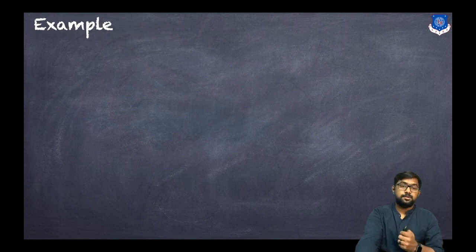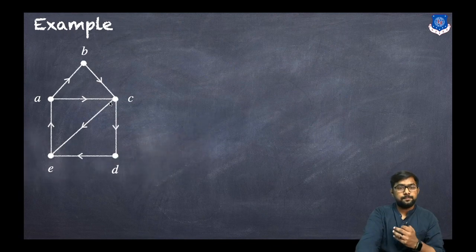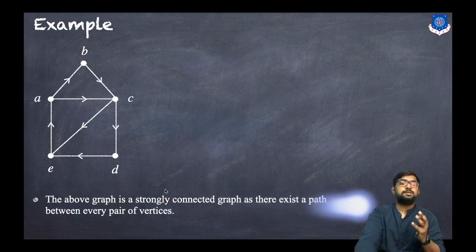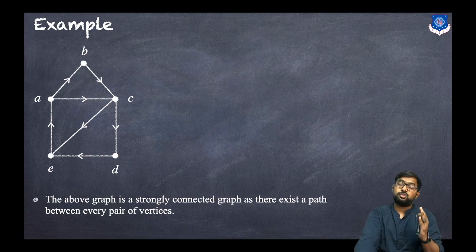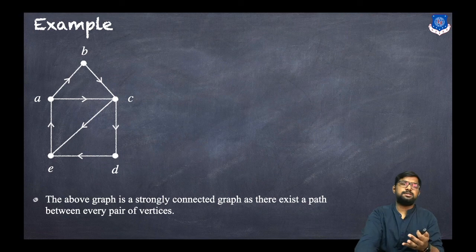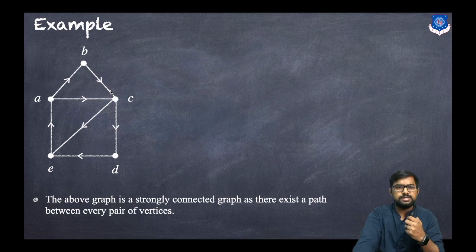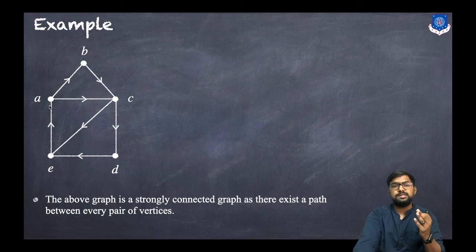Now let us discuss an example. Consider this graph with vertices a, b, c, d, e. We need to check whether it is strongly connected or weakly connected. The answer is the above graph is strongly connected, because there exists a path between each and every pair of vertices. Consider a and b — we can go from a to b, and for b to a the path is b→c→d→e→a.